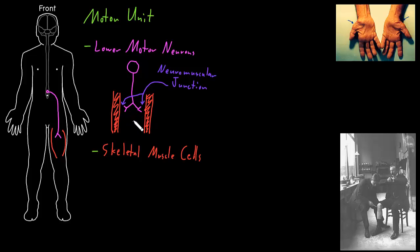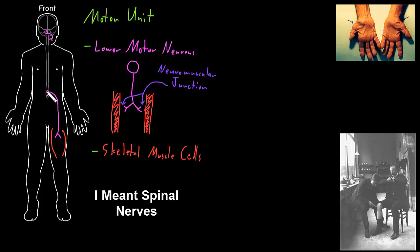Instead of these cells doing different things at different times, usually they function as a unit — all of them are activated together. The somas of the lower motor neurons are in the spinal cord or up in the brain stem. Their axons pass out in the cranial nerves if they pass through the skull, or the spinal nerves if they pass through the spine, and continue through branches of nerves in the peripheral nervous system until they synapse on all the skeletal muscle cells in their motor unit. Lower motor neurons in the cranial nerves primarily control skeletal muscles of the head and neck, while those in the spinal cord primarily control skeletal muscle in the limbs and trunk.